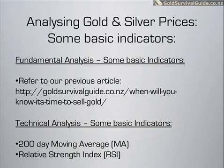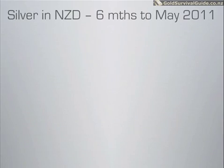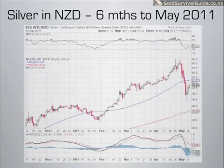The two indicators we're covering are: one, the 200 day moving average, and the second one is the Relative Strength Index, commonly known as the RSI — not to be confused with repetitive strain injury, which when you stare at these charts for too long you probably can get.